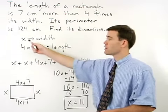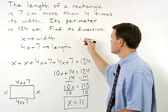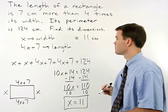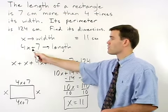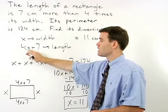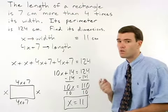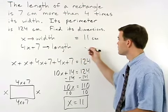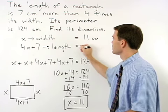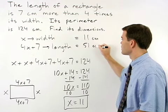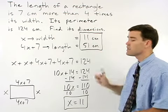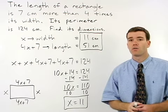So x equals 11, so our width, which is x, equals 11 centimeters. And our length, 4x plus 7, would then be 4 times 11, or 44 plus 7, which is 51. So our length is 51 centimeters. And these are the dimensions of our rectangle.